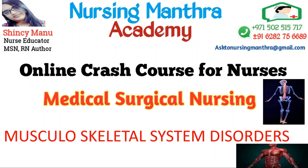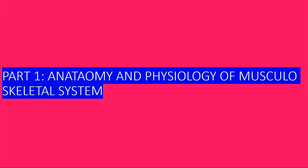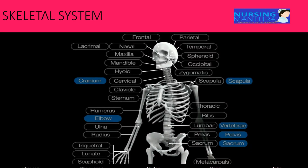Welcome to Nursimandra Academy Online Crash Course for Nurses - Medical Surgical Nursing. We are going to discuss musculoskeletal system disorders. First part: anatomy and physiology of the musculoskeletal system. There are 206 bones in our body and 700 muscles that make up the human body.